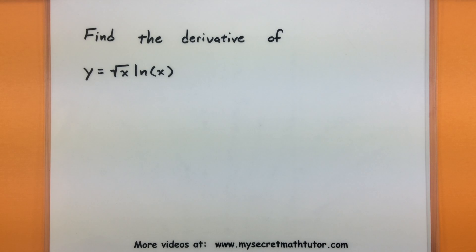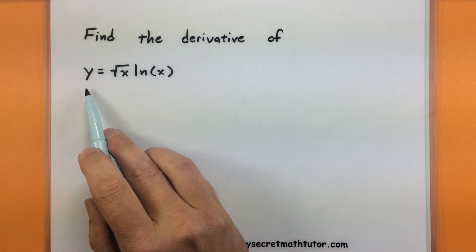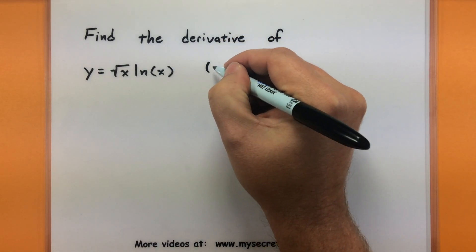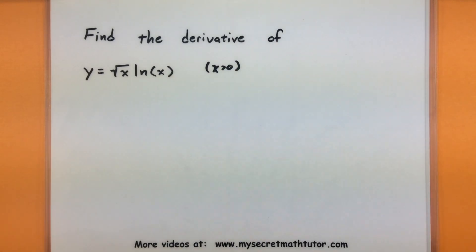Let's try something a little bit more complicated and involve our product rule. So for this one, we're looking for the derivative of y equals the square root of x multiplied by the natural log of x. Like before, x is a positive number.